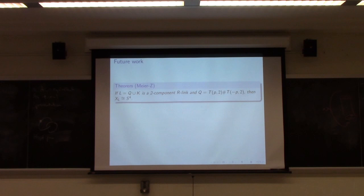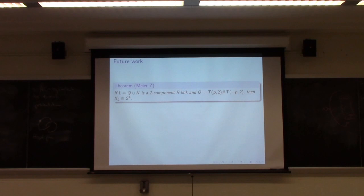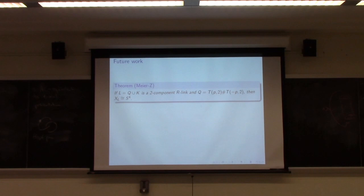So the recap: start with an R-link, promote it until we get a Casson-Gordon derivative, classify all Casson-Gordon derivatives as handle-slide equivalent to specific lifts of curves, then standardize in the special case using Gompf's torus trick. The main theorem: if the parent knot is the connected sum of T(p,2) and T(-p,2), the four-manifold is standard S4. We'd like to extend this to more general results, but nothing has been successful so far.